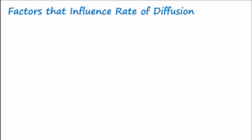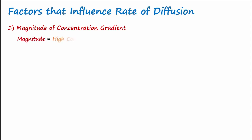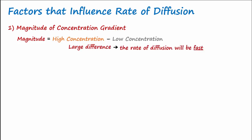There are several factors that influence the rate of diffusion. The biggest influence is the magnitude of the concentration gradient. Simply put, the magnitude is the difference between the area of high concentration and the area of low concentration. If you have a large difference between the high and low, then the rate of diffusion will be fast. Conversely, if you have a small difference, the rate of diffusion will be slow.